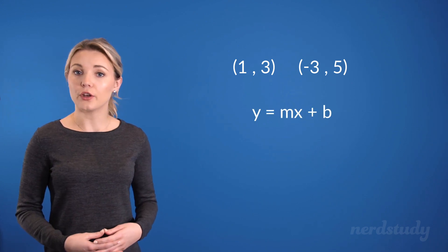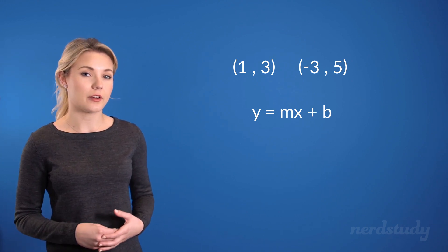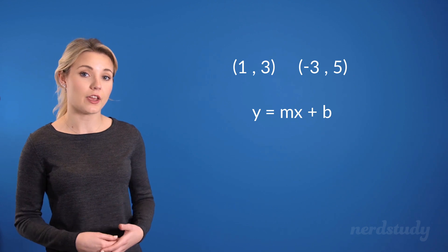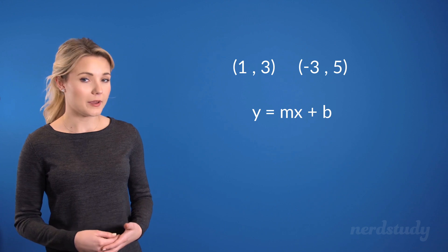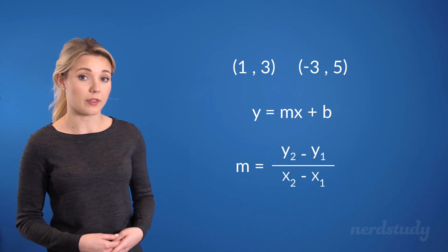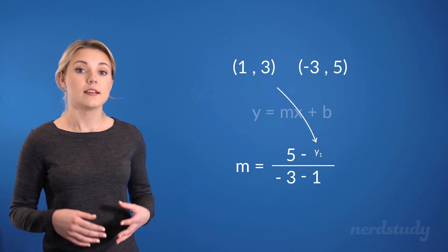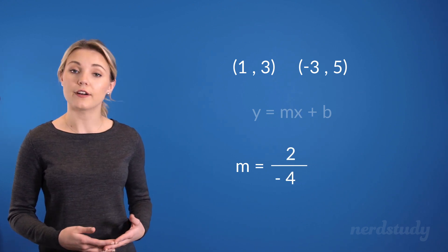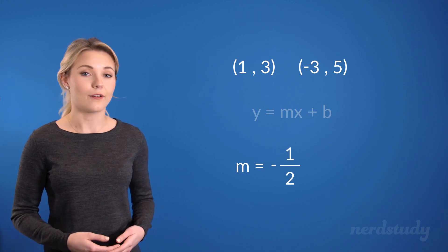Right off the bat, we know we can use the two points to find the slope of this equation. This part is similar to how we went about finding the linear equation in our point-slope form video. All we need to do is use our slope formula here and plug in our numbers to get the following. Simplifying this gives us 2 over negative 4, which simplifies down to negative 1 over 2.